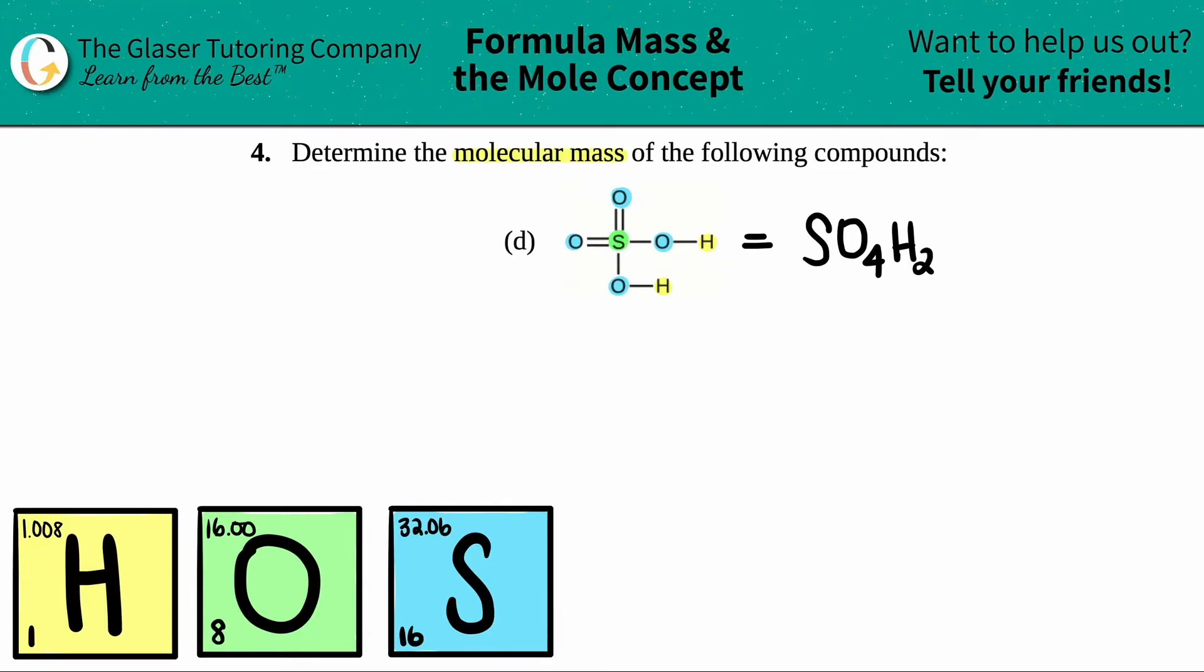Technically, it doesn't matter what order you put it in if you find the molecular mass. But this one, this is basically going to be H2SO4. So all I'm going to do is I'm just going to erase this. And I'm just going to say that the H2s are in the front. So I have two hydrogens in the front, and then the S, and then O4. This is like the general formula of this structure. But remember, it doesn't matter which element you write out first when you find the molecular mass.